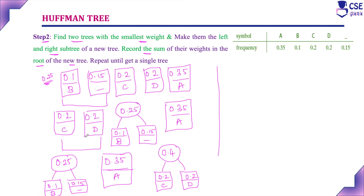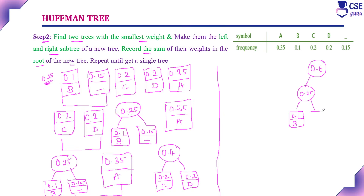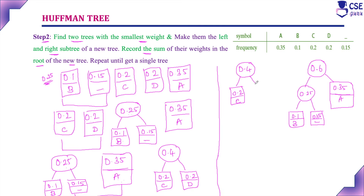Next step: find the two trees with the smallest weight. Now 0.25 and 0.35 are smallest. Adding these two trees: 0.25 plus 0.35 gives 0.6. The root is 0.6; the left subtree is 0.25 with B at 0.1 and underscore at 0.15, and the right subtree is A at 0.35. Now its sum is 0.6 and the remaining tree is 0.4 with C and D.